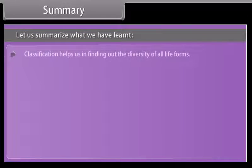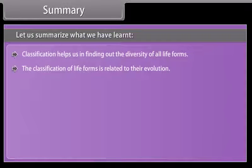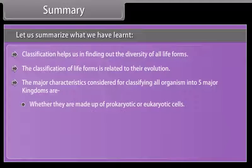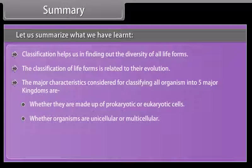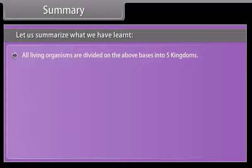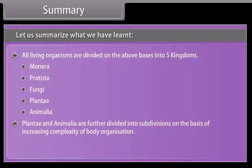Summary: Classification helps us in finding out the diversity of all life forms. The classification of life forms is related to their evolution. The major characteristics considered for classifying all organisms into five major kingdoms are: whether they are made up of prokaryotic or eukaryotic cells, whether organisms are unicellular or multicellular, whether organisms have a cell wall, and whether organisms prepare their own food. All living organisms are divided into five kingdoms: Monera, Protista, Fungi, Plantae, and Animalia. Plantae and Animalia are further divided into subdivisions on the basis of increasing complexity of body organization.